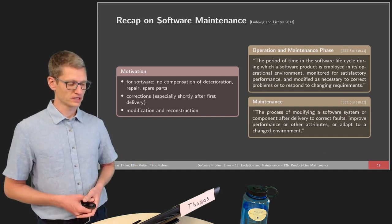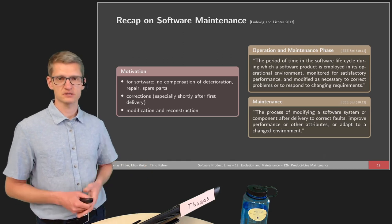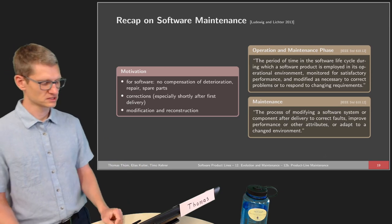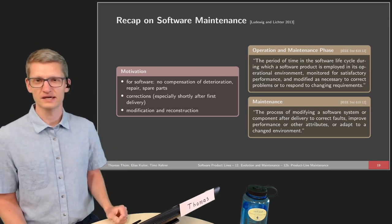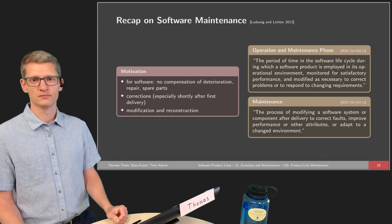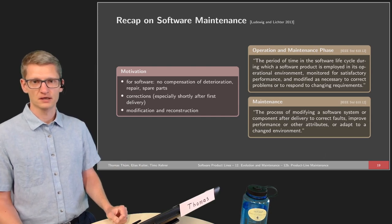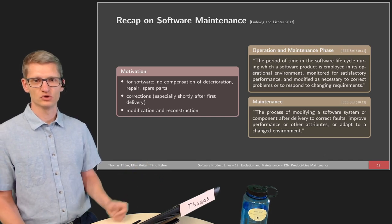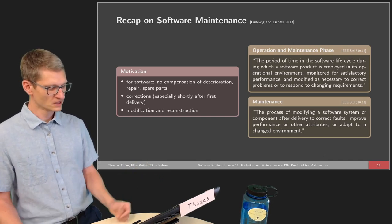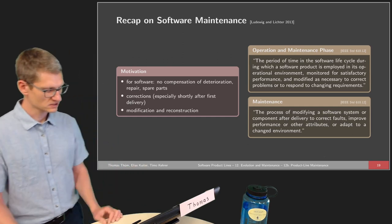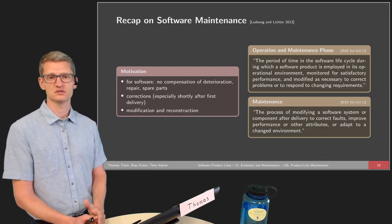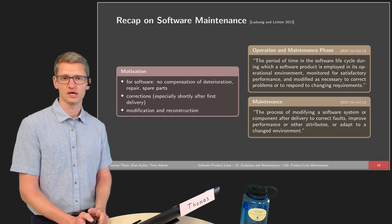There are also changing requirements — problems that come from a changed situation. This brings us back to the quote from the first part of the lecture: if software runs the world, then if something changes in the world, we might also need to change the software. Maintenance is the process of modifying a software system or component after delivery to correct faults, improve performance or other attributes, or adapt to a changed environment.